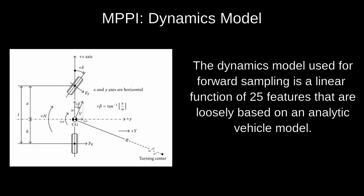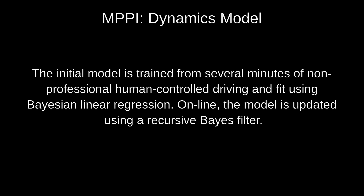The dynamics model used for forward sampling is a linear function of 25 features that are loosely based on an analytic vehicle model. The initial model is trained from several minutes of non-professional human-controlled driving and fit using Bayesian linear regression. Online, the model is updated using a recursive Bayes filter.